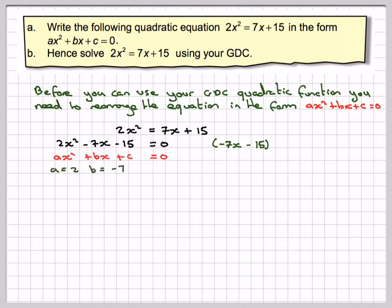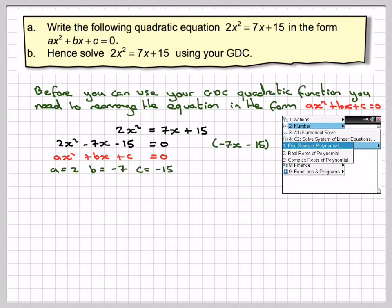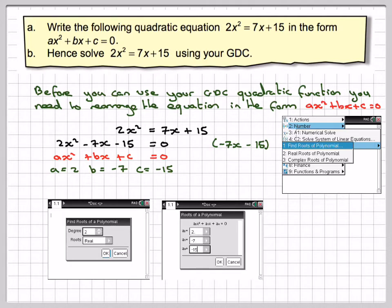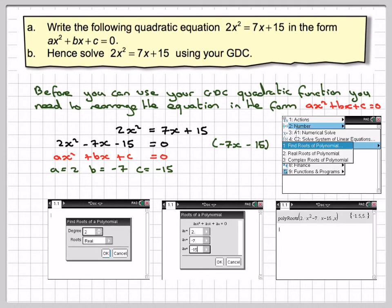So A is 2, B is minus 7, C is minus 15, these are the steps on the calculator that I've just done. If you're not sure, rewind the video and just have another look. And then at the end we're going to write down that x is equal to minus 1.5 or 5. There are two possible solutions.